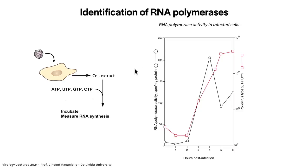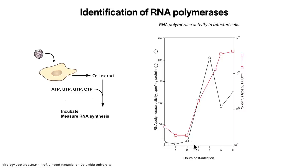How are RNA polymerases identified? RNA-dependent RNA polymerase is the term I'll use for viral enzymes that copy viral RNA. What researchers did was infect cells with a virus, then at different times after infection, they cracked the cells open, made a cell extract, and added the four triphosphates needed to make RNA — ATP, UTP, GTP, and CTP — one of which was radioactive. They then incubated this and measured RNA synthesis. One of those early results is shown here on this graph.